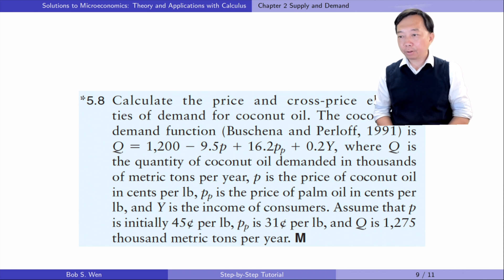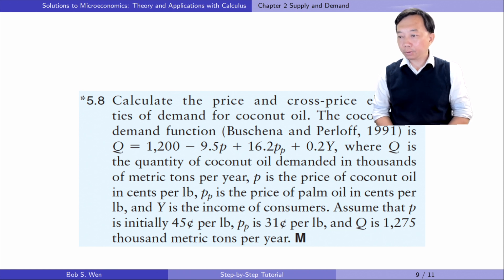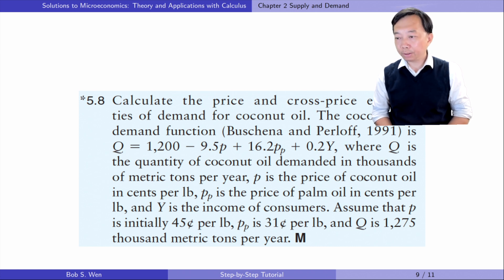Let's solve exercise 5.8. Calculate the price and cross-price elasticities of demand for coconut oil. The coconut oil demand function is as follows, where Q is the quantity of coconut oil demanded in thousands of metric tons per year, P is the price of coconut oil in cents per pound, PP is the price of palm oil in cents per pound, and Y is the income of consumers. Assume that P is initially 45 cents per pound, PP is 31 cents per pound, and Q is 1,275,000 metric tons per year.